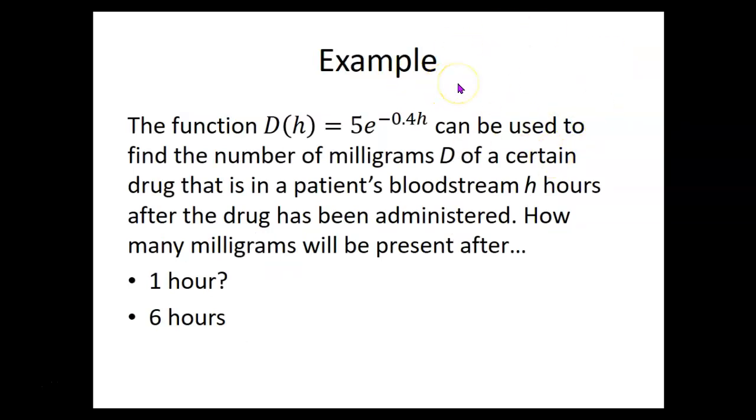Now an example of evaluating an exponential function. Here it says the function D(h) equals 5 times e to the negative 0.4h can be used to find the number of milligrams D of a certain drug that is in a patient's bloodstream h hours after the drug has been administered. So the number you plug in for h is the number of hours it's been since the drug was administered, and the number you get out for D(h) is the number of milligrams of the drug that's still present.